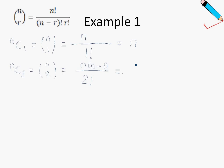And similarly, if I was to simplify this, this is just n times (n minus 1) over 2, because 2 factorial is 1 times 2, which is just 2.